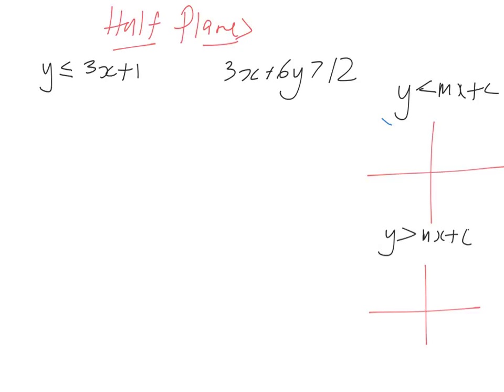Now, because it is less than, not less than or equal to, we draw it with a dotted line. And now we're saying y is less than this, so that means it is below. So we're shading that half of the plane, that half of all real numbers.